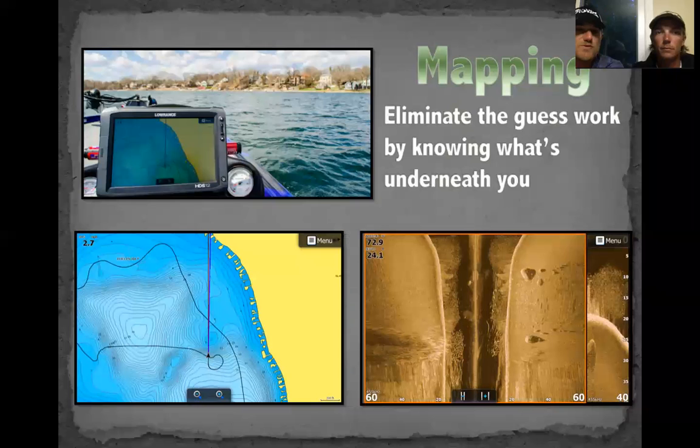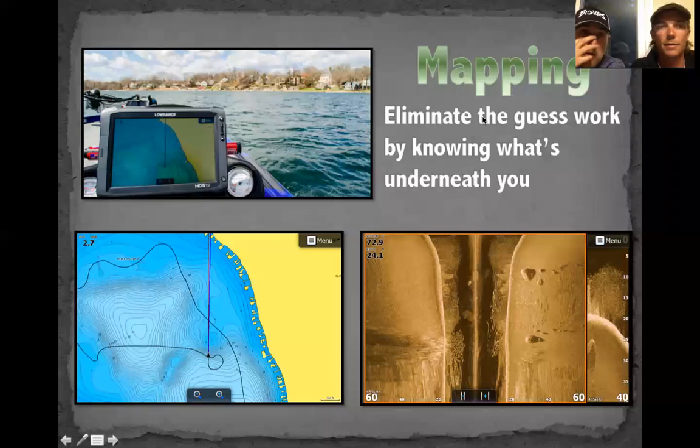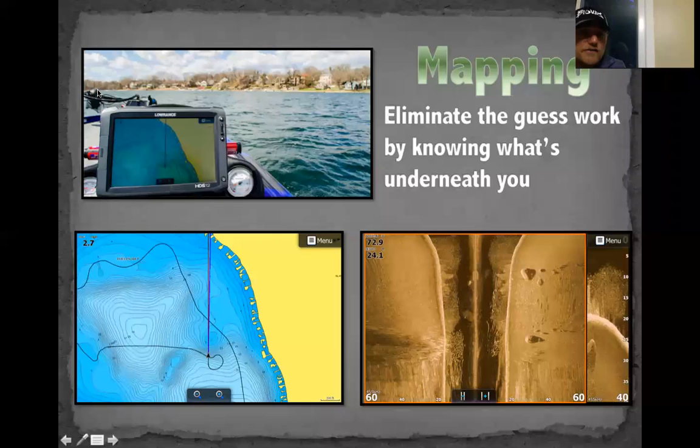Without Navionics map cards in my units, I'd literally be lost on the lake. It eliminates the guesswork. If you look at this screenshot of my unit, I'm fishing an underwater point on my map, but looking ahead at the shoreline there's really not a point visible. You'd have to be guessing — but looking at my Navionics map at the bottom, there is a point, and that's what it looks like. Then I turn to my electronics to find what's going on.